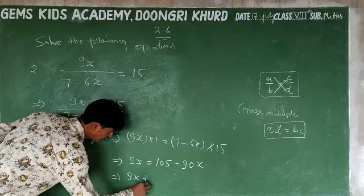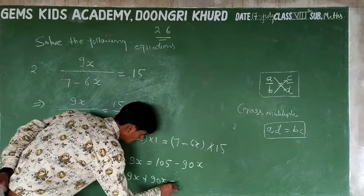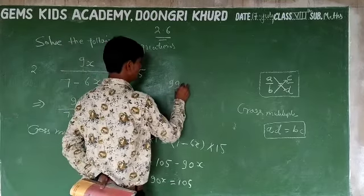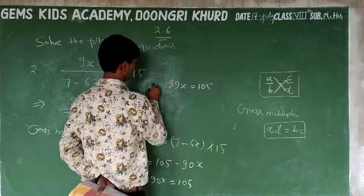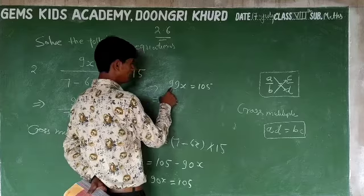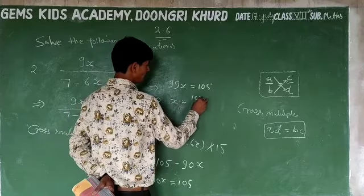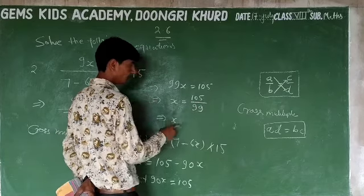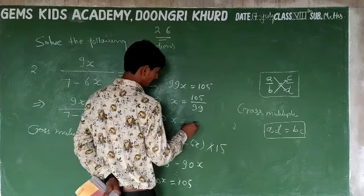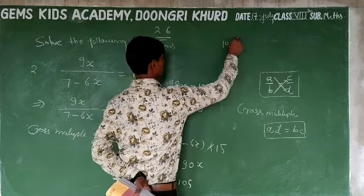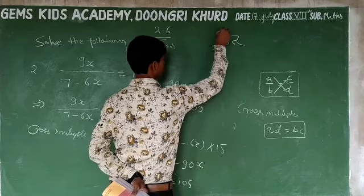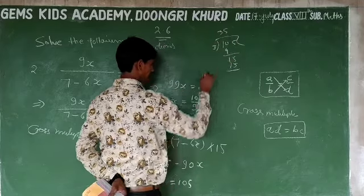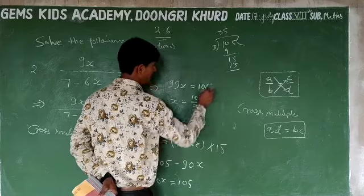Now collecting x terms: 9x plus 90x equals 105. So 99x equals 105. We need to simplify 105 upon 99.